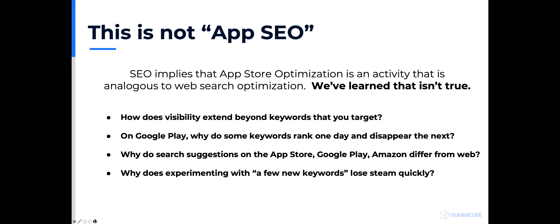On Google, if you pay attention to your rankings on a day-to-day basis, you'll see they change from one day to the next — that doesn't happen with the web. Search suggestions on the app store and Google Play differ from the web, even anecdotally. A/B testing is one thing to improve conversion, but keyword optimization is another. Keywords are not meant to be cycled through like an A/B test every few days from an organic perspective.